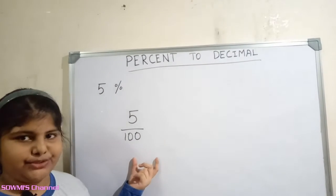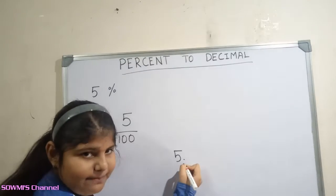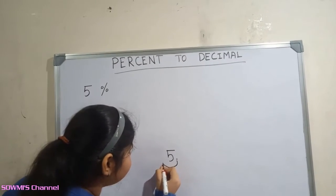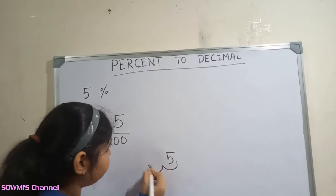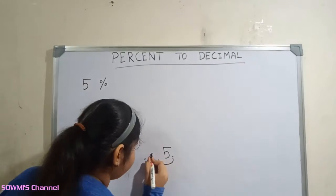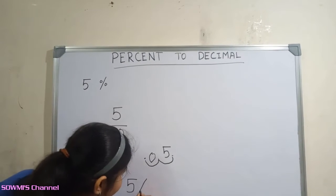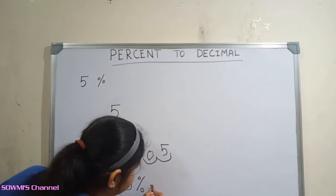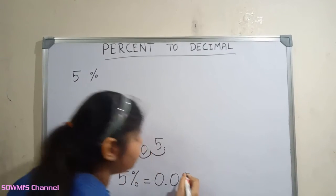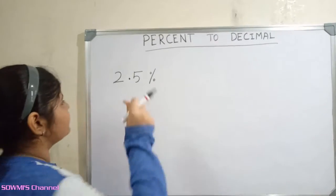The easy way to divide by hundred is to move the decimal point two places to the left — one, two — and fill the extra spaces with zeros. So the answer is: five percentage is equal to zero point zero five. Let us see another example: two point five percentage.